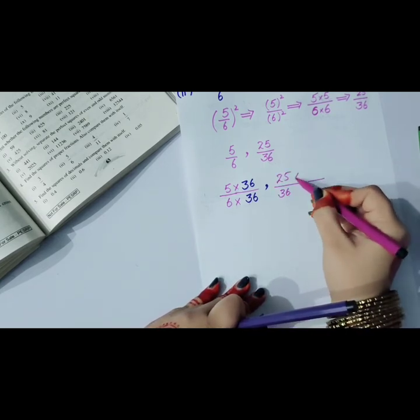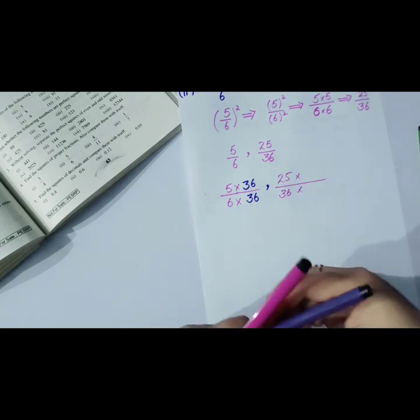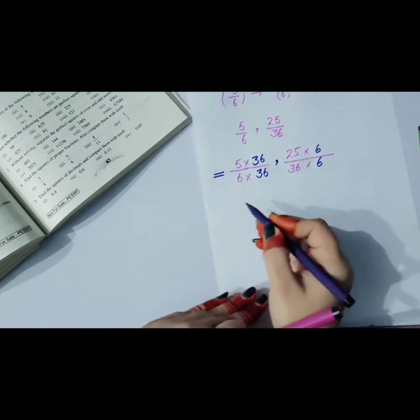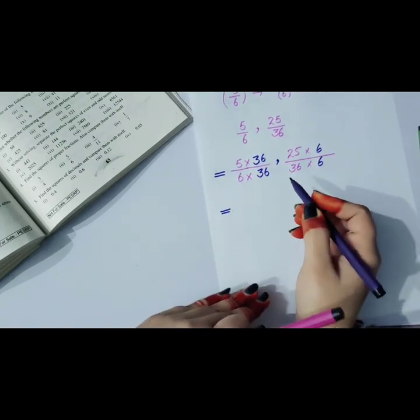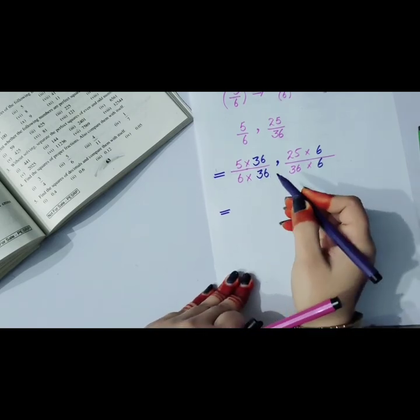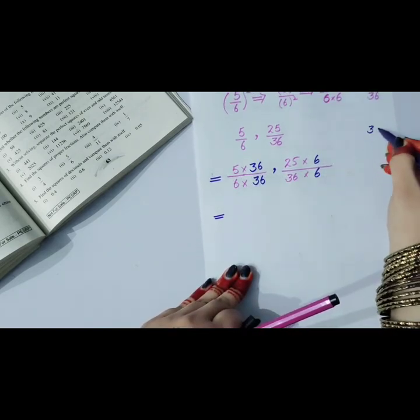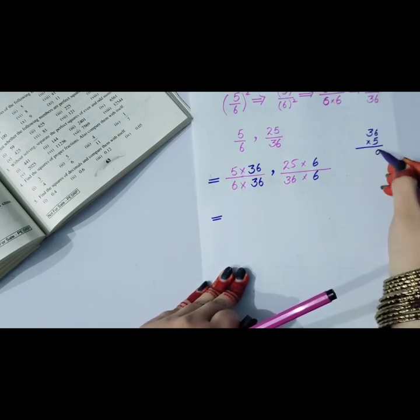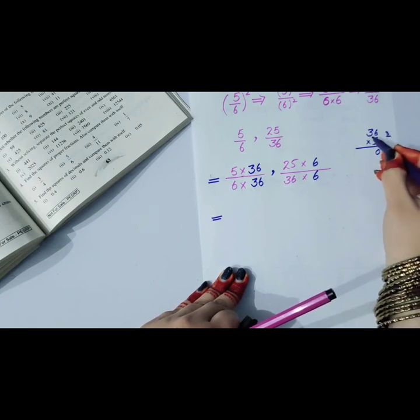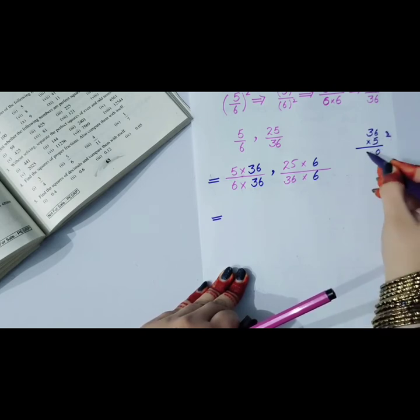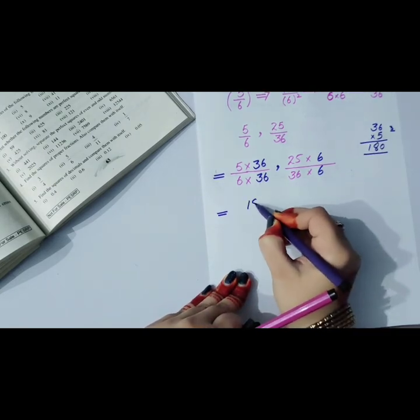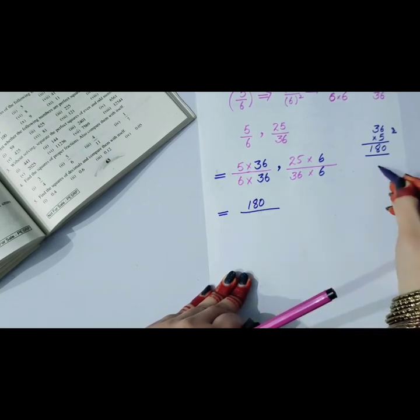Now we have to compare 5 by 6 with 25 by 36. To make denominators the same, multiply 5 by 36 equals 180. 6 times 36 equals 216.